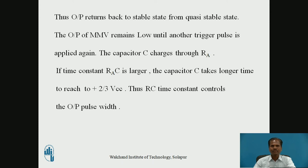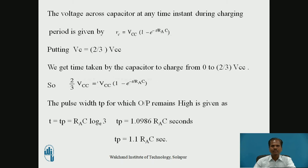The capacitor C charges through resistor RA. If the time constant RA×C is larger, the capacitor C takes longer to reach the threshold voltage of plus two-thirds VCC. Thus, the RC time constant controls the output pulse width. The voltage across the capacitor at any time instant during the charging process is given by: V_C = VCC × (1 − e^(−T / RA×C)).